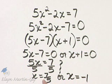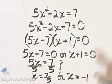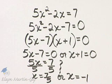So we have two solutions. 7 fifths is a solution. Also, negative 1 is a solution. And we solved by factoring.